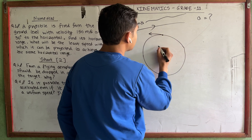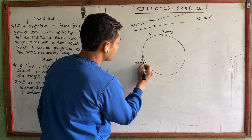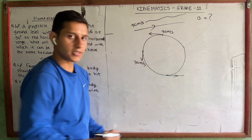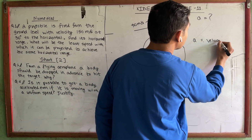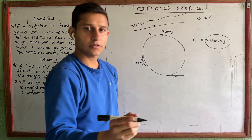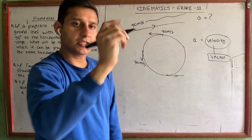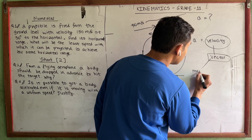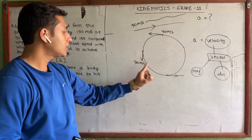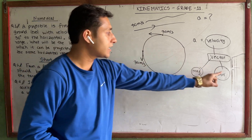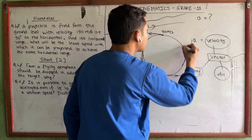Consider a body moving at a uniform speed of 30 meters per second. The speed at every point is the same. But what will change is the velocity. Velocity is a vector quantity — it has both magnitude and direction. The magnitude remains the same, but the direction will change.